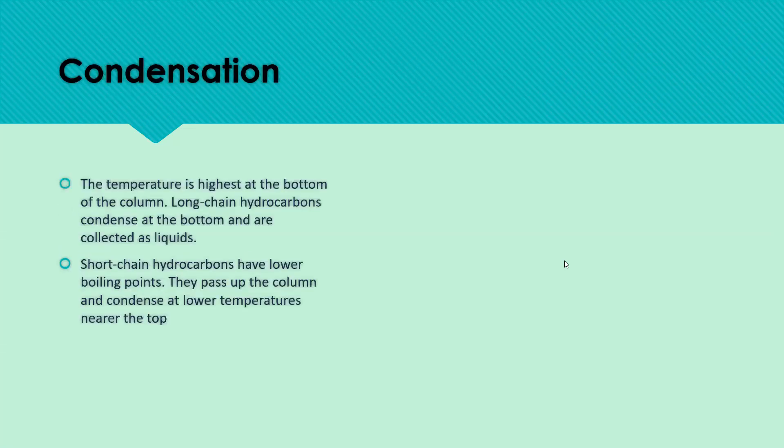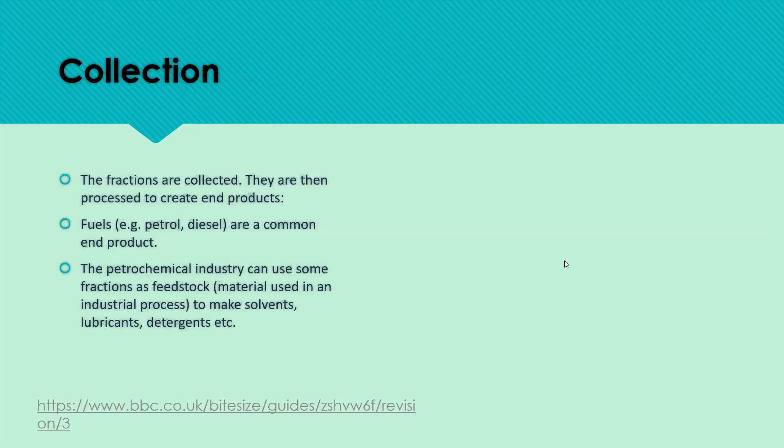Condensation. The temperature is highest at the bottom of the column. Long chain hydrocarbons condense at the bottom and are collected as liquids. Short chain hydrocarbons have lower boiling points. They pass up the column and condense at lower temperatures nearer the top.